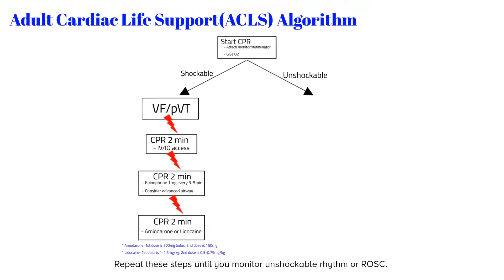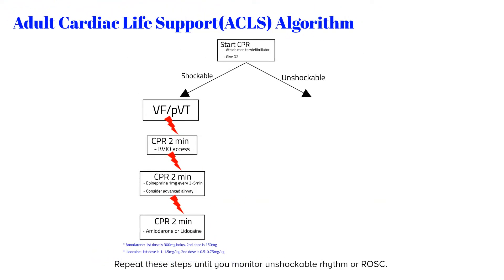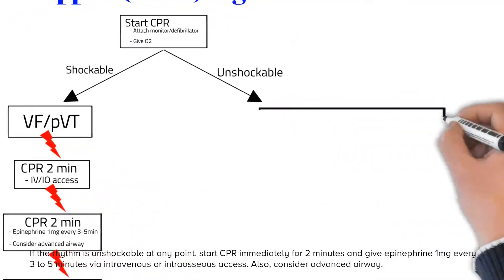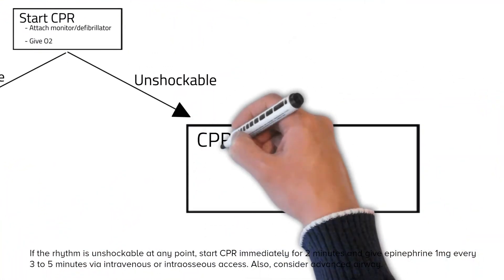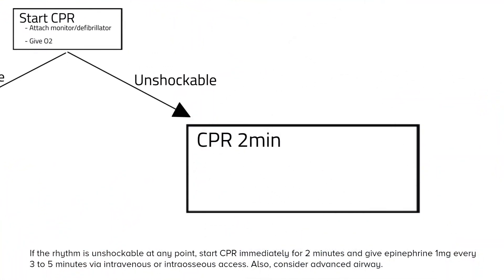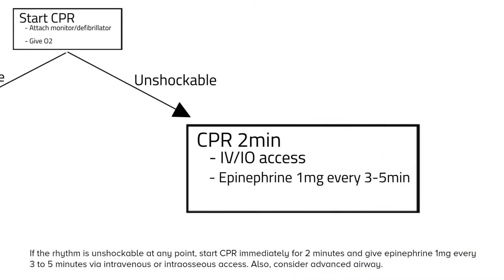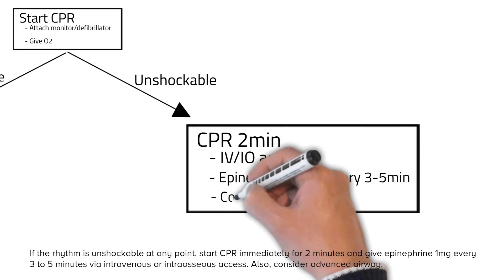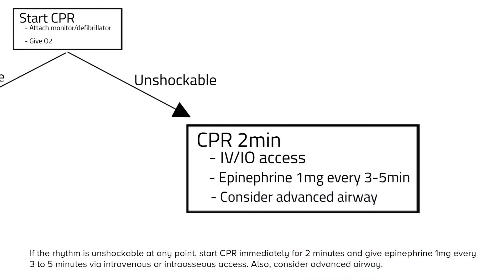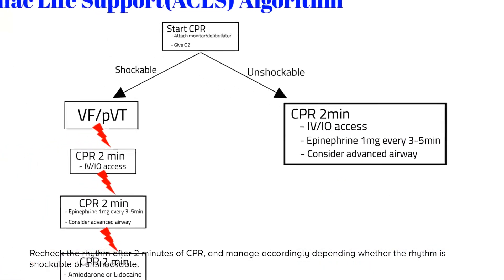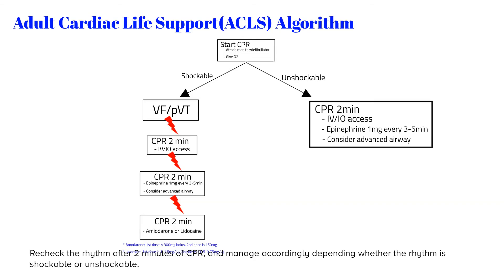Repeat these steps until you observe an unshockable rhythm or return of spontaneous circulation. If the rhythm is unshockable at any point, start CPR immediately for 2 minutes and give epinephrine 1 mg every 3–5 minutes via intravenous or intraosseous access. Also consider advanced airway. Recheck the rhythm after 2 minutes of CPR and manage accordingly, depending on whether the rhythm is shockable or unshockable.